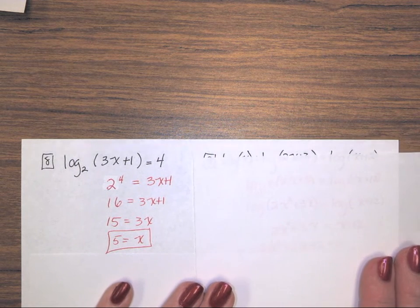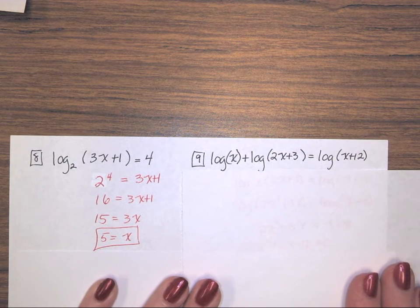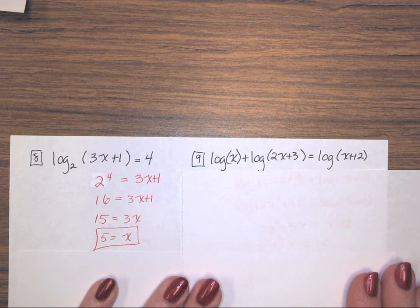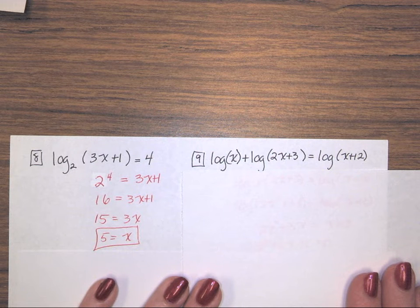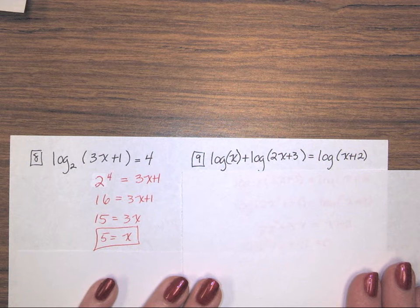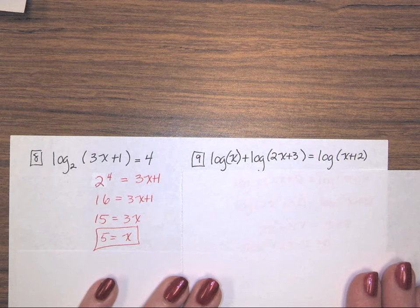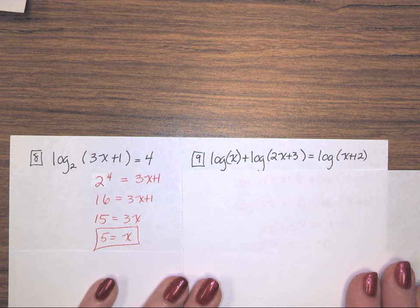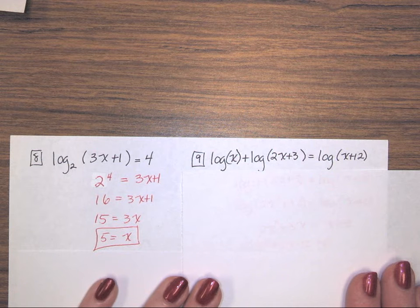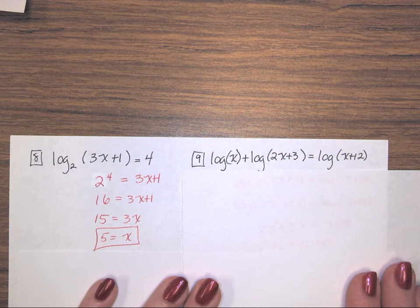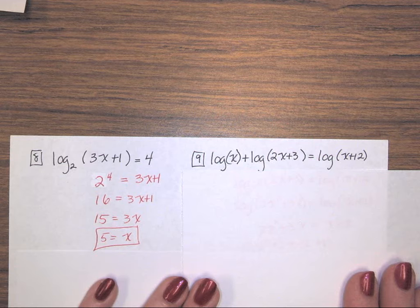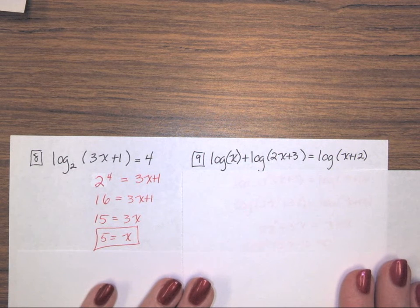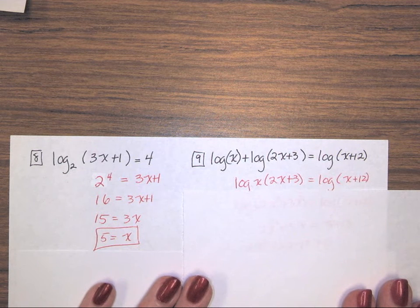Number 9. I have log base 10 of x plus log base 10 of 2x plus 3 in parentheses, equals log base 10 of, in parentheses, x plus 12. So I've got logs on both sides, and on the left I have log written twice, so I need to condense that to a single log. Because those logs are being added as a single log, those values are multiplied.